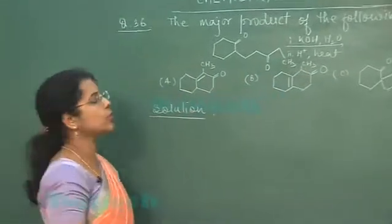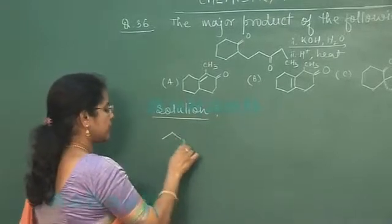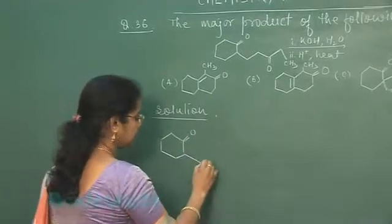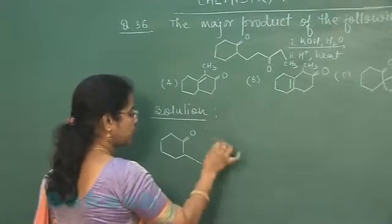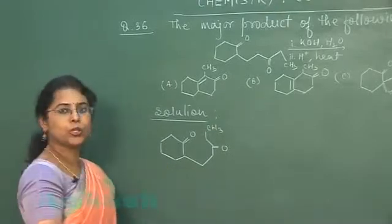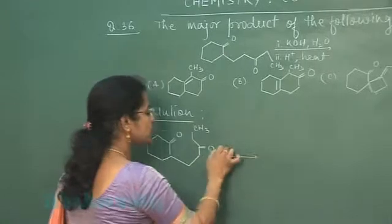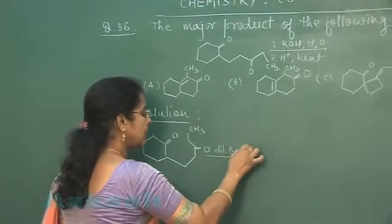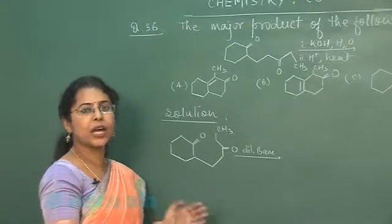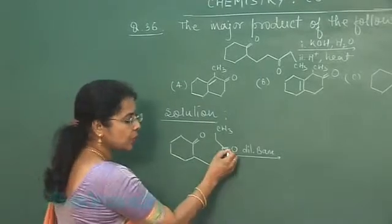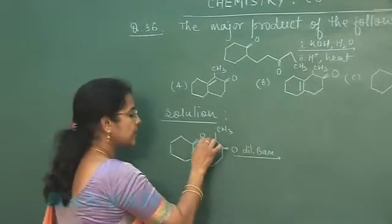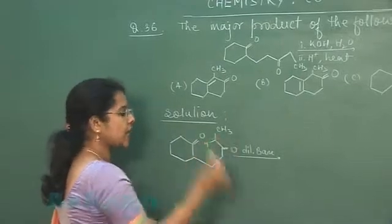To find the answer we have to solve this equation. This compound has two ketonic groups, and the condition being used is dilute base. In the presence of dilute base, a carbonyl compound having alpha hydrogen atoms can show acidic nature. With respect to the carbonyl group, here is an alpha hydrogen atom — this hydrogen atom is lost and an anion is formed.